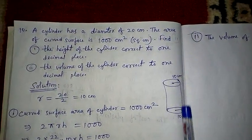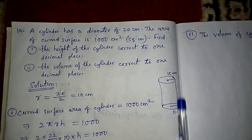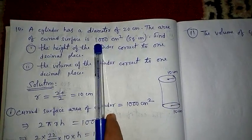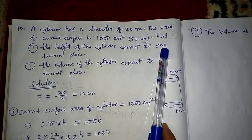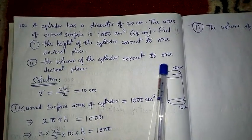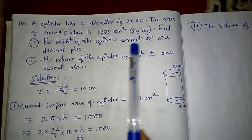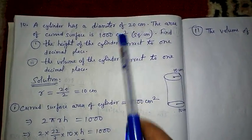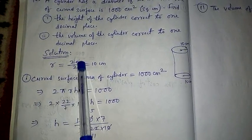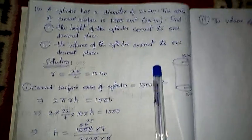Let me discuss one more question. A cylinder has a diameter of 20 centimeter. Dividing by 2, radius = 10 centimeter. The curved surface area is given as 1000 centimeter square. We need to find the height — answer should be to one decimal place — and then find the volume, also to one decimal place.